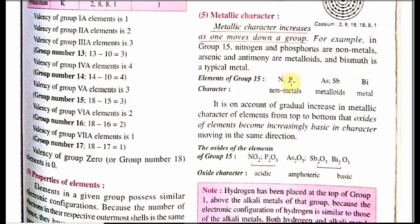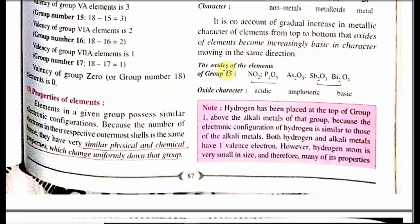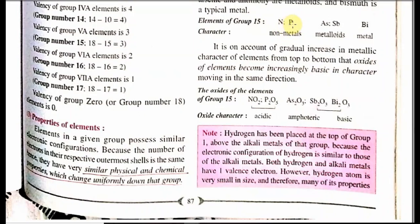It is on account of gradual increase in metallic character from top to bottom that the oxides of elements become increasingly basic — elements lower in the group order have a highly basic character. For example, in group 15: nitrogen and phosphorus are non-metals and their oxides (nitrogen dioxide, phosphorus oxide) are acidic, but bismuth oxide is basic. If you compare NO2 and bismuth oxide, bismuth oxide is highly basic in comparison to nitrogen dioxide.